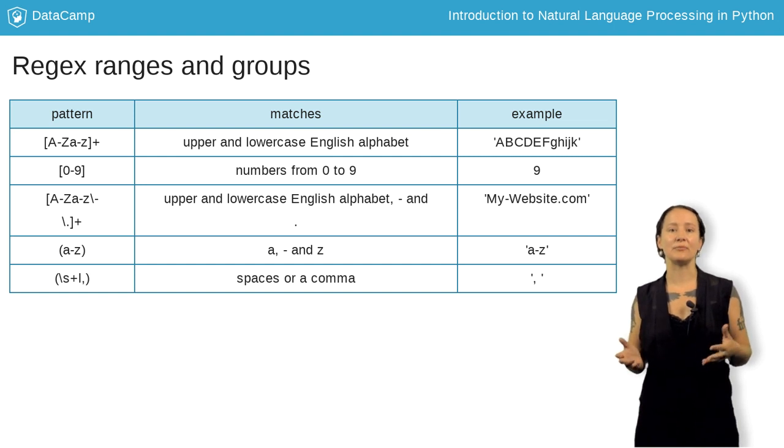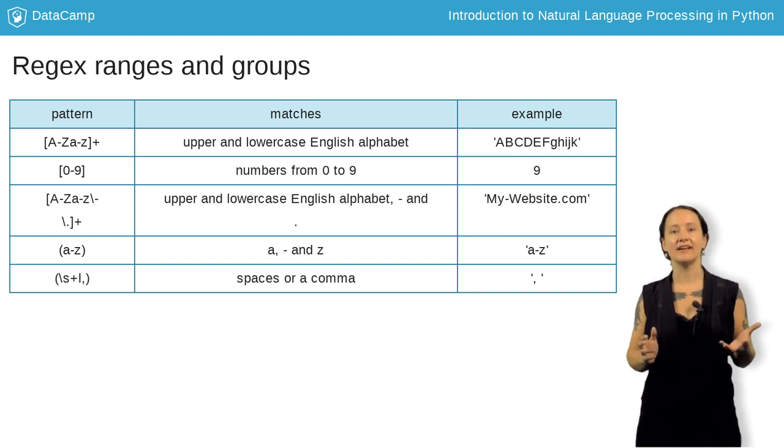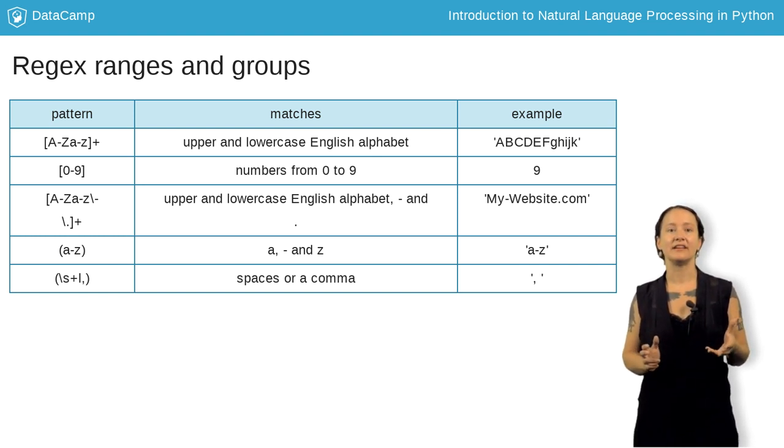We can see in this chart that we can use square brackets to define a new character class. For example, we can match all upper and lowercase English letters using uppercase A hyphen uppercase Z, which will match all uppercase letters, and then lowercase A hyphen lowercase Z, which will match all lowercase letters.